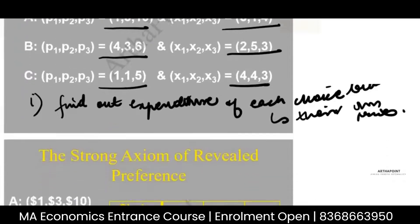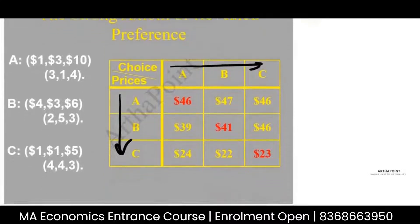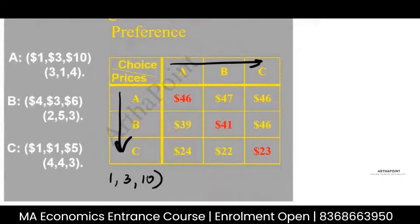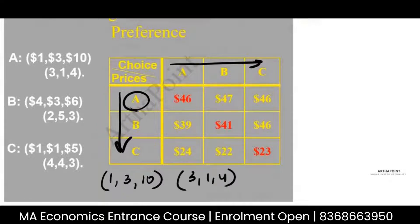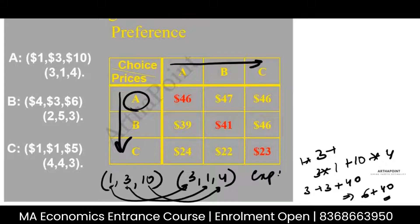Now I've taken my prices here and my bundles here — very similar to what we did before. My prices are 1, 3, 10 and my bundle is 3, 1, 4. What is the expenditure? It is 1×3 plus 3×1 plus 10×4 — each price multiplied by their quantity. So that's 3 plus 3 plus 40 = 6 plus 40 = 46 rupees.